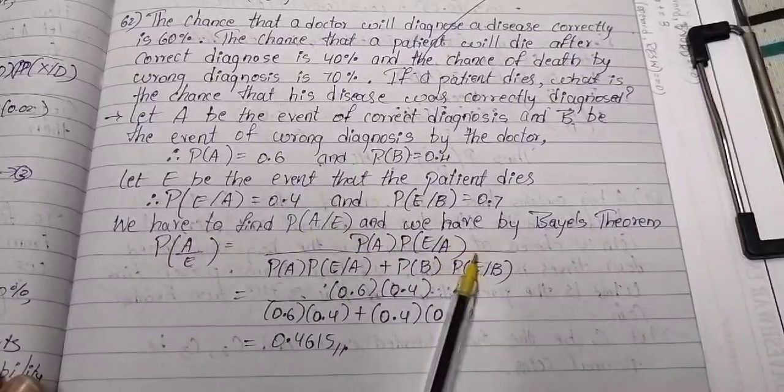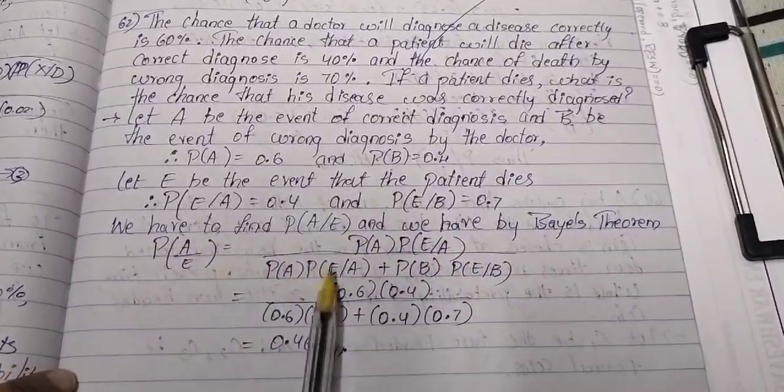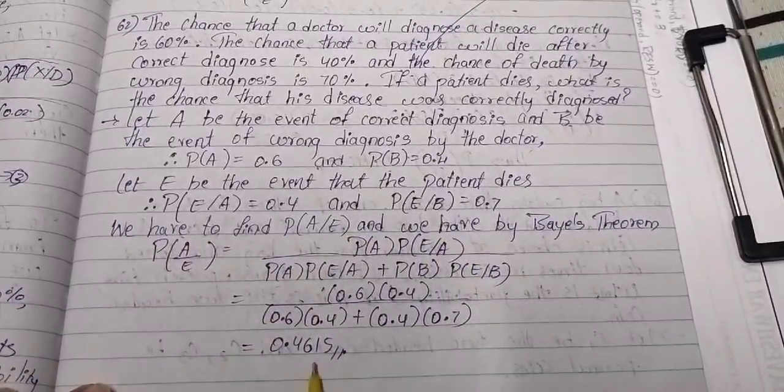By using the Bayes theorem, we substitute all the values and we get 0.4615.